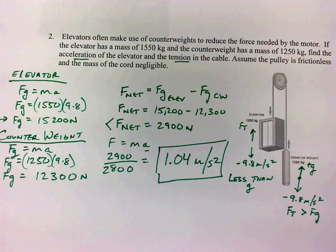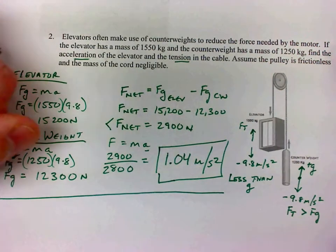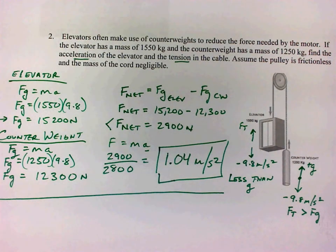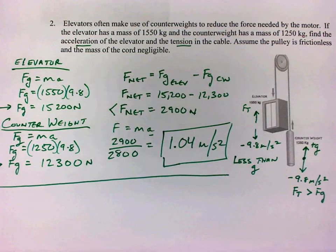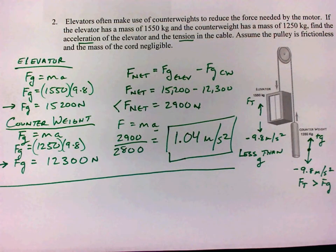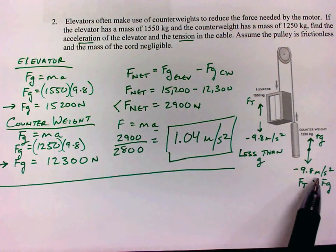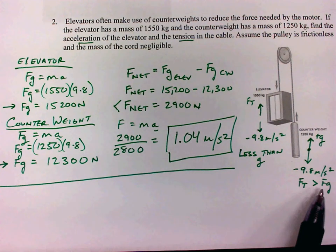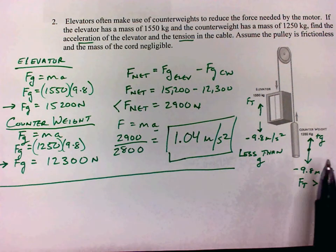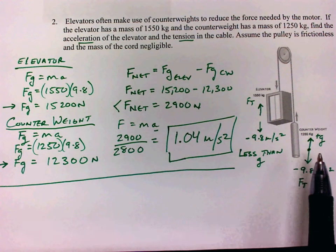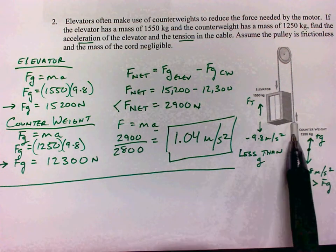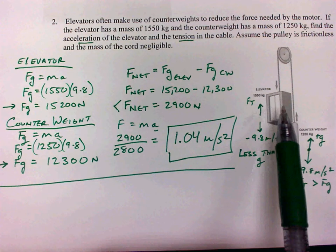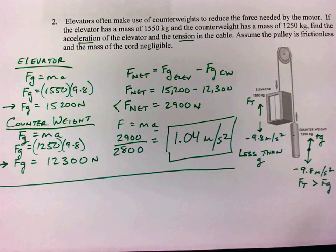That solves the first part. The second part is tension. To analyze tension, we go back to the accelerations. For the counterweight — and we want to pick one of the two objects; I'm going to pick the counterweight, though you could pick the elevator — both will work out to the same number as long as you do everything correctly.